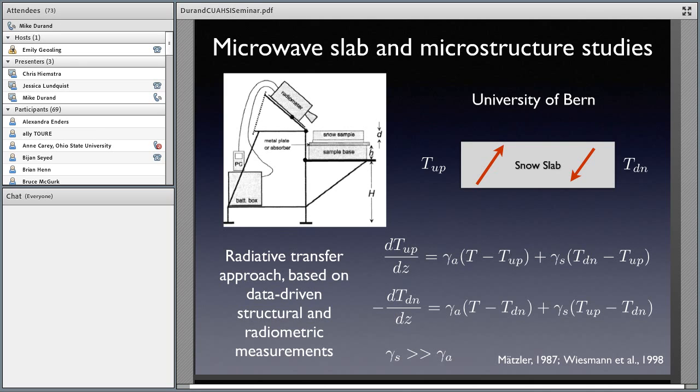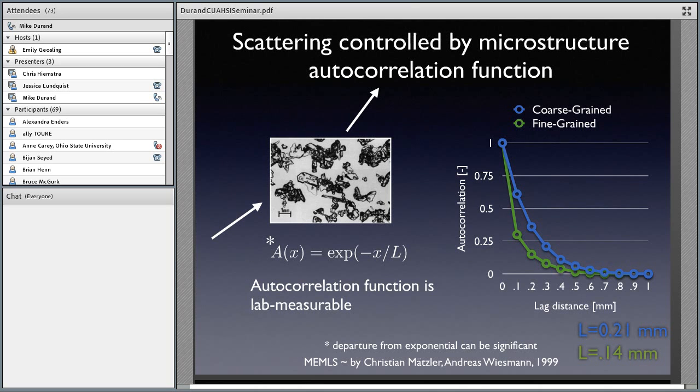What should we be measuring? I want to go back to some studies that were done at the University of Bern, Switzerland, in the 80s and 90s, especially in the late 90s, with Andreas Wiesmann. I really like their approach. They treated the microwave being propagated through a homogeneous snow slab as a two-flux approximation. You've got an upward-going microwave flux and a downward-going microwave flux. The downward is important because the snow begins to emit as well, as well as multiple internal reflections. This gives you pretty straightforward two-coupled differential equations that you can solve with two boundary conditions. The gamma s represents the scattering. Gamma a represents the absorption. The scattering tends to be quite a bit larger than the absorption at most microwave frequencies.